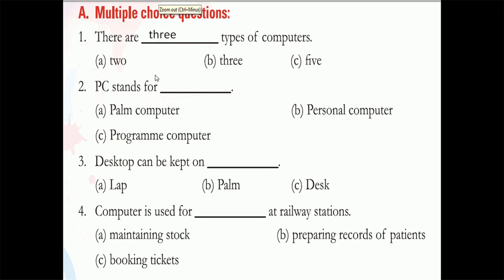The answer to that question is three. Next, PC stands for personal computer — that's why we say PC. Next question: desktop can be kept on where? Desktop can be kept on a desk, that's why we call it a desktop computer. We see many computers in our computer lab and all are kept on a desk, so the answer is desk.